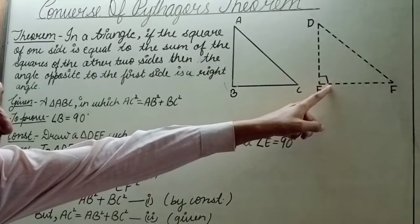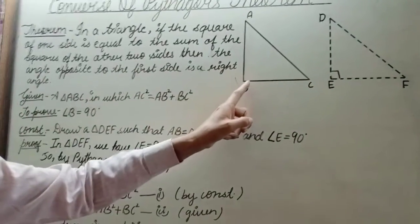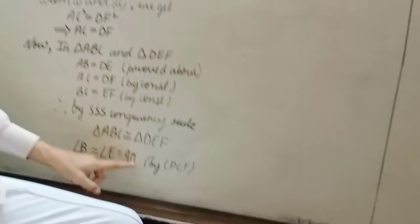But, angle E = 90°. Therefore, angle B is also 90 degrees. This is what we were asked to prove. Thanks for joining.